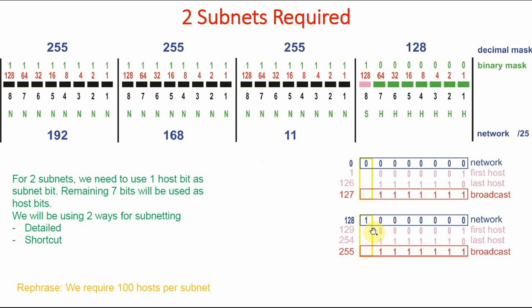For the valid host range in the second subnet, the first host has the subnet bit fixed at 1 and host bits as 0000001, giving 128 plus 1 = 192.168.11.129. The last valid host has the pattern with subnet bit 1 and host bits 1111110, giving 128 plus 64 plus 32 plus 16 plus 8 plus 4 plus 2 = 254. So valid hosts in the second subnet range from 192.168.11.129 to 192.168.11.254.